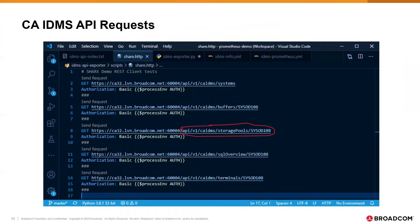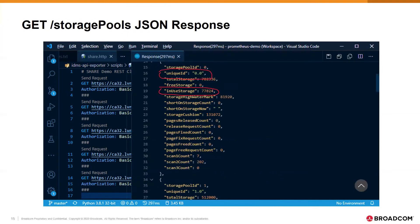We just need the ZOS job name to identify which IDMS system we want information about. Now we use the job name to issue an HTTP GET request for the storage pools endpoint, and we get a list of the storage pools for that system. For our example, all we care about is the pool ID — a number that identifies each pool uniquely — and the amount of storage used for each pool.